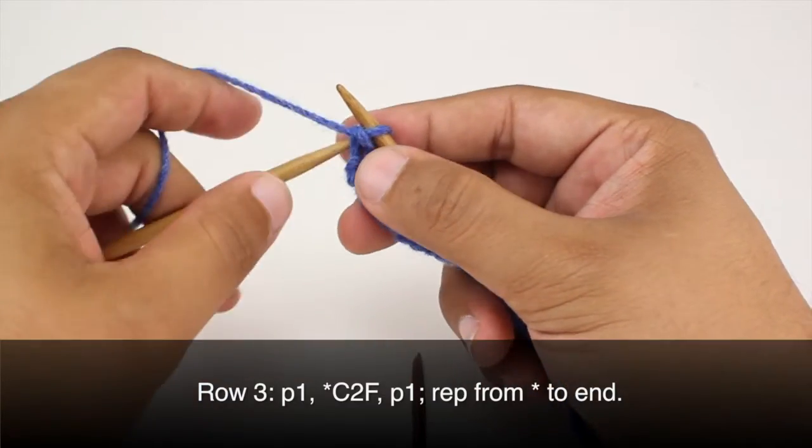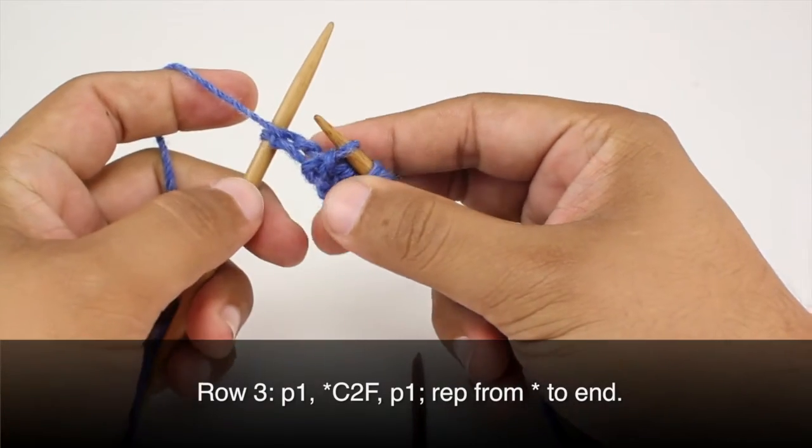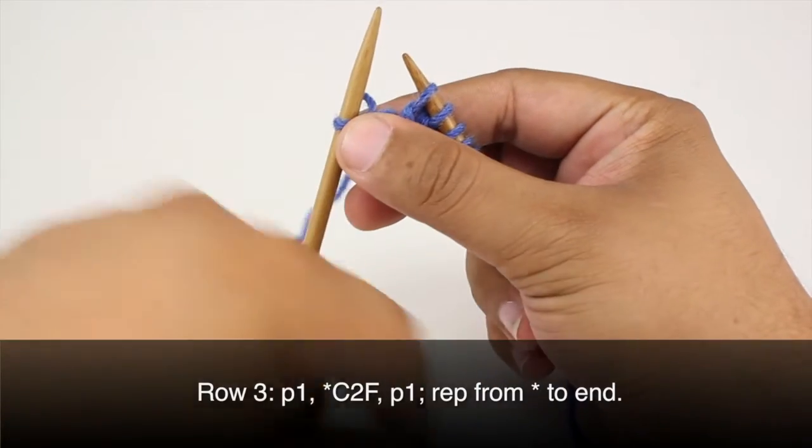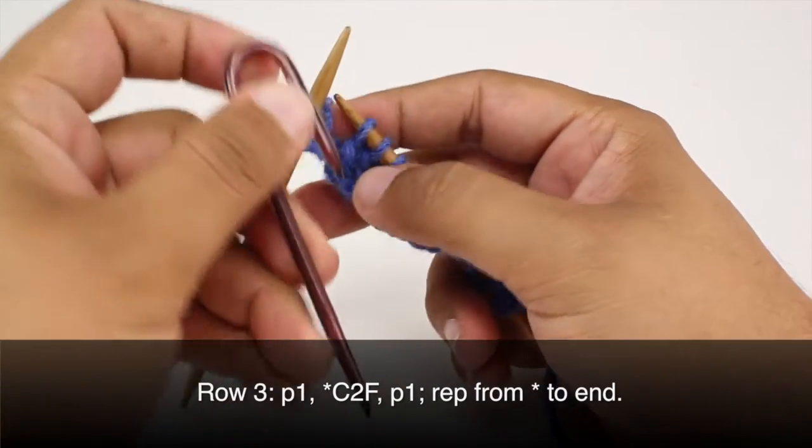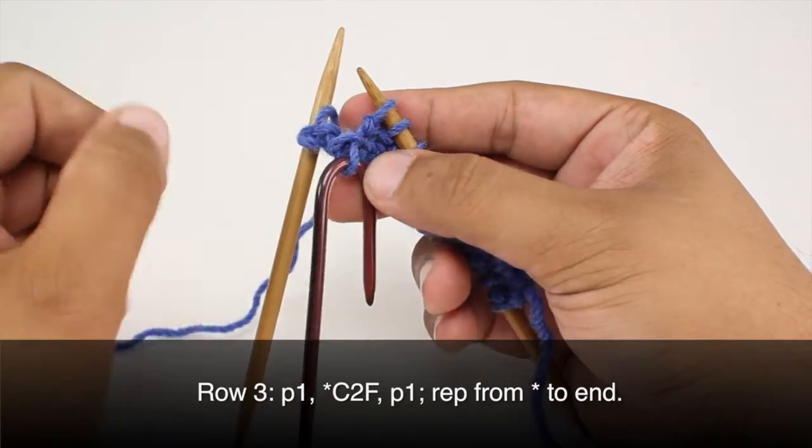Row 3: We're going to begin by purling 1. Then we'll start our repeat by doing a cable 2 forward. So again we're going to take our cable needle. We're going to slip the first stitch onto the needle. This time we're going to let it hang in front of our work.